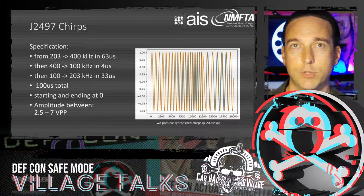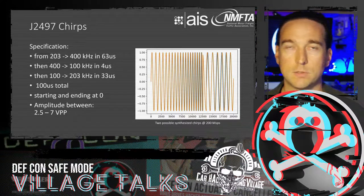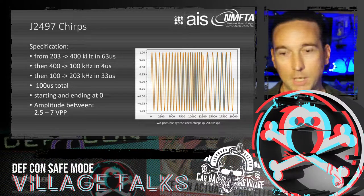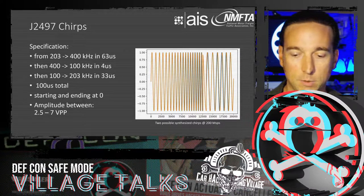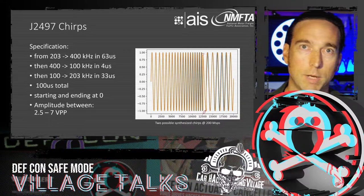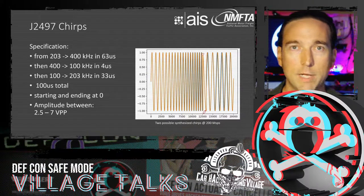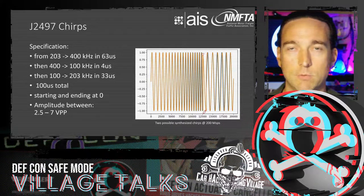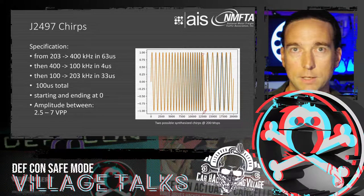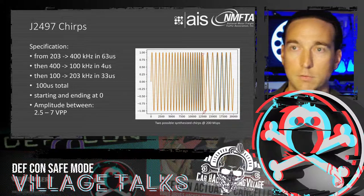The J2497 specification defines the chirp precisely: it must sweep from 200 to 400 kHz, then 400 to 100 kHz, then 100 to 203 kHz. The chirps are about 100 microseconds total, start and end at zero so they can be concatenated, and should be transmitted at 2.5 to 7 volts peak-to-peak per spec. In practice, trailer equipment transmitters tend to send them even higher than 7 V peak-to-peak to ensure the signal reaches across the full tractor-trailer.